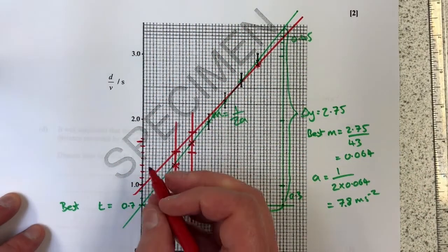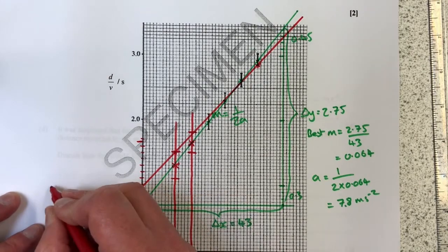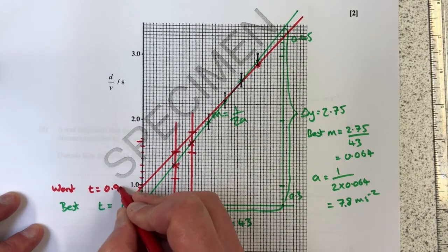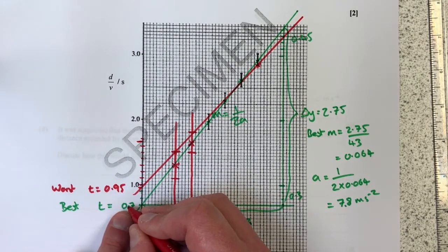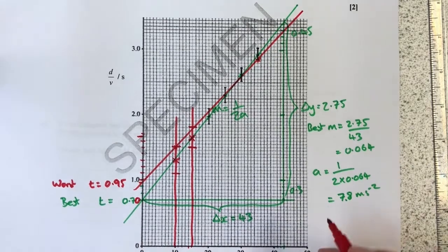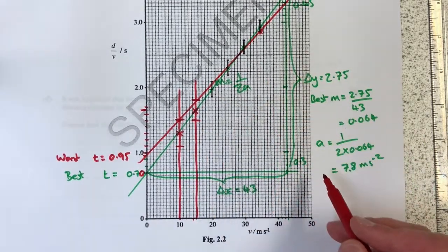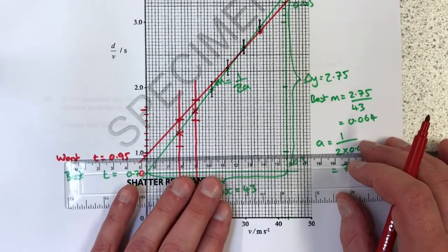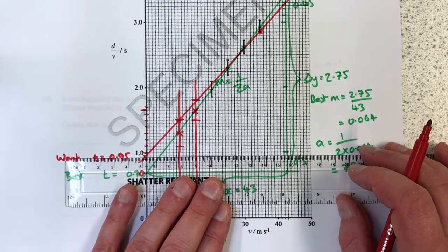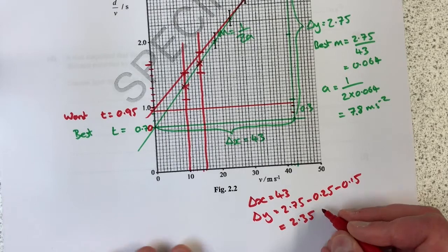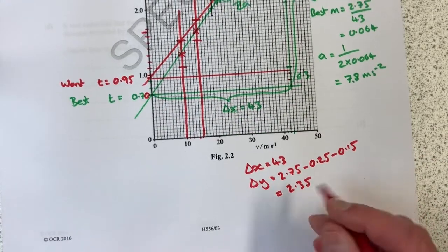So now I've got a y-intercept worst of t equals, and that's going to be 0.95. Best record this as 0.70. Then as a result of that being 0.95, and now I need to do all of this all over again. But the way I'm going to do it is my dx is going to be the same for both, so 43.